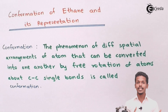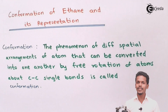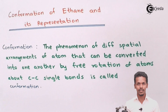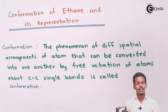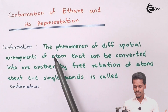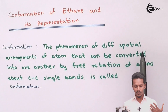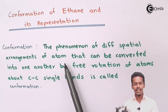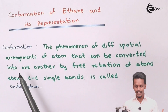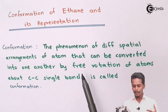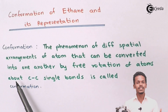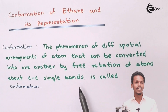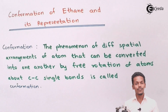Starting with the conformation of ethane, but before that we have to know what conformation actually means. Conformation means the phenomenon of different spatial arrangements of atoms that can be converted into one another by free rotation of atoms about carbon-carbon single bonds. It is called conformation.